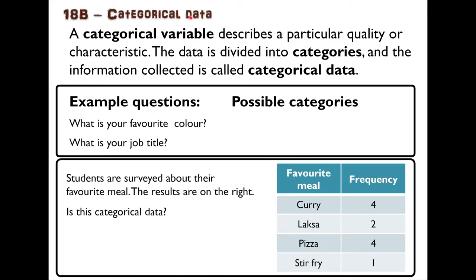I want to introduce a term called categorical data. A categorical variable describes a particular quality or characteristic — for example, favourite colour or job title. The data, the answers to the question, are divided into categories, and the information collected is called categorical data.